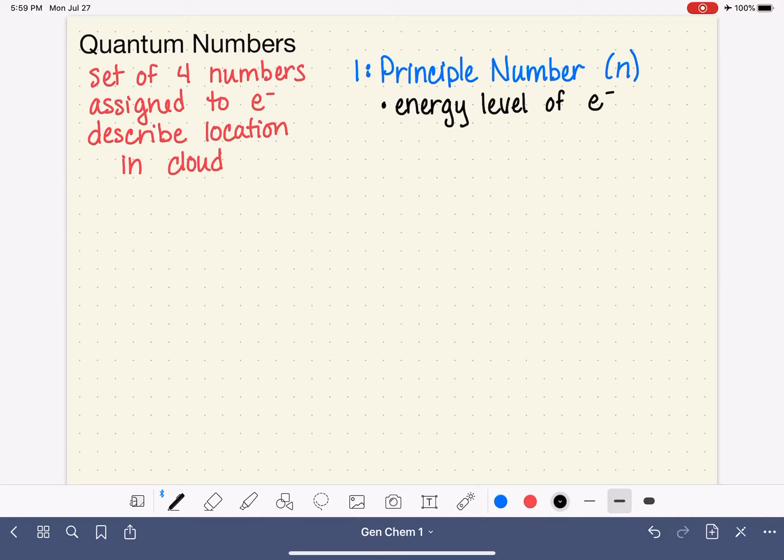If it looks familiar to you, it is familiar. We have talked about n before. We just haven't referred to it as the principal quantum number. It's used to describe the energy level of the electron and the size of the electron density, the size of the cloud where the electron is allowed to occupy.